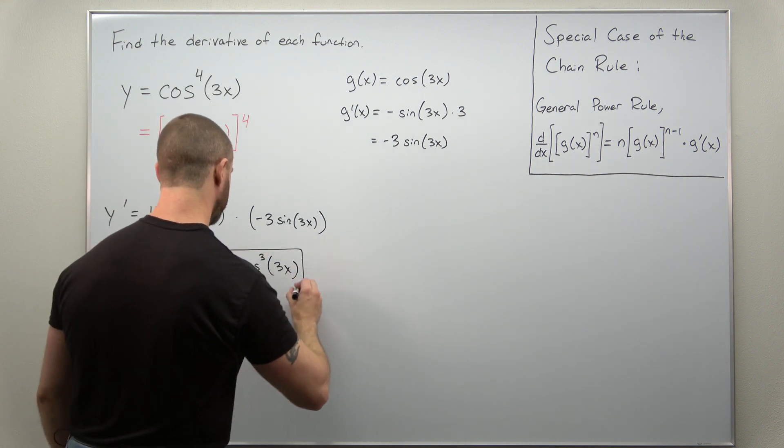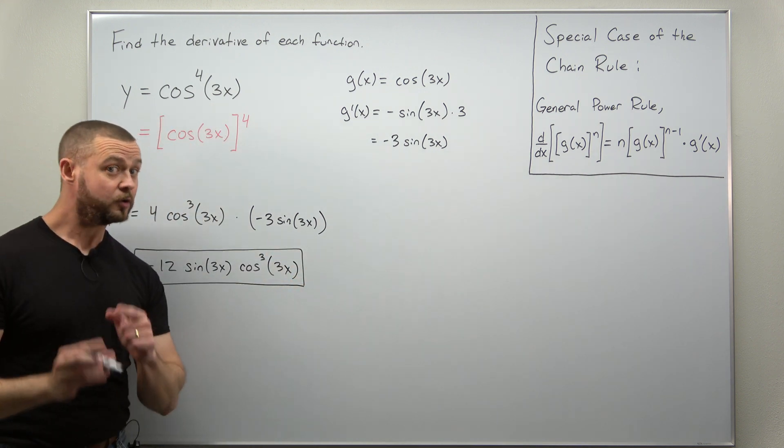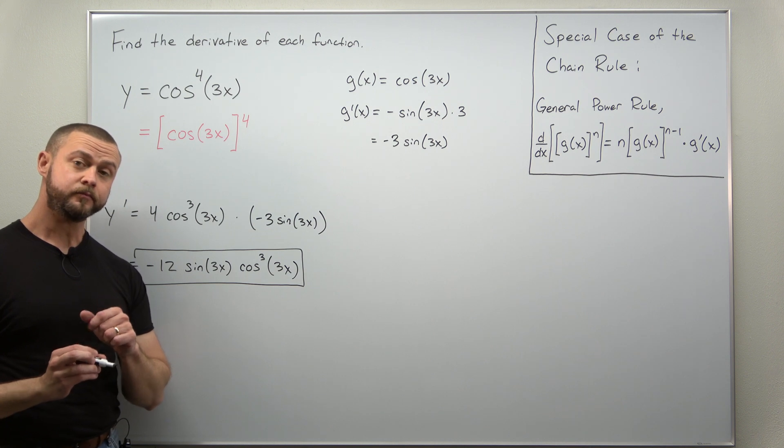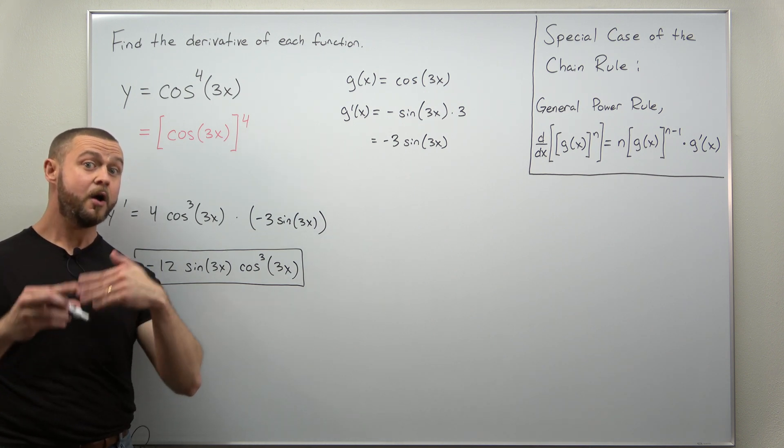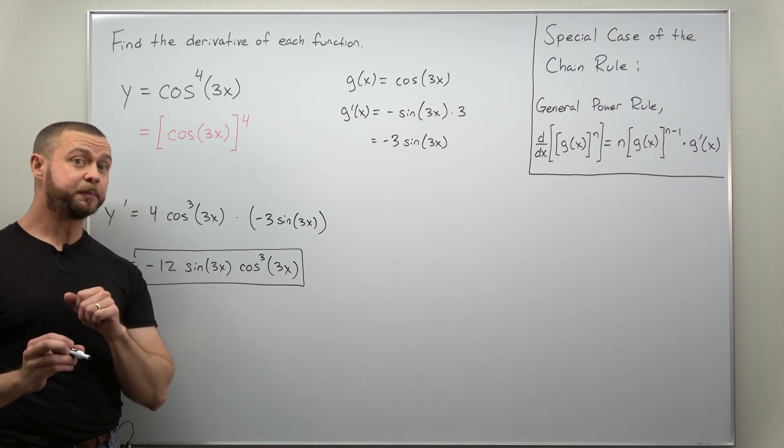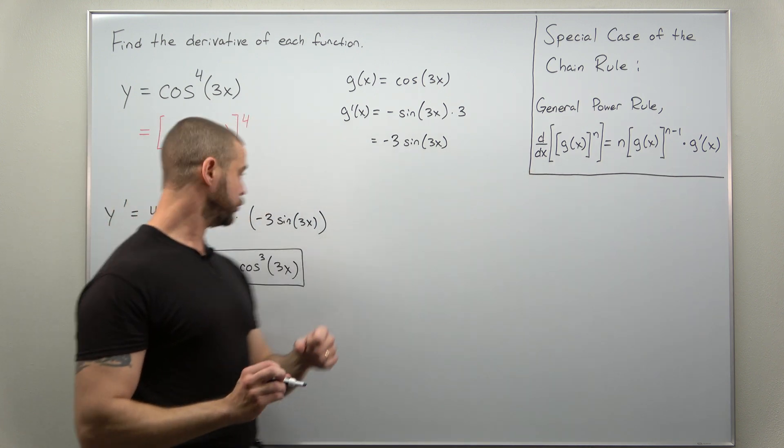And that is our derivative. Applying the chain rule several times here. All right. And just make sure you see it here how we were applying it. So we first applied the chain rule using the general power rule. That was this first step here.